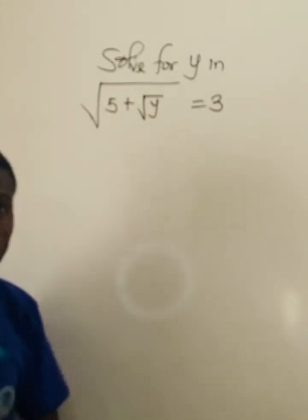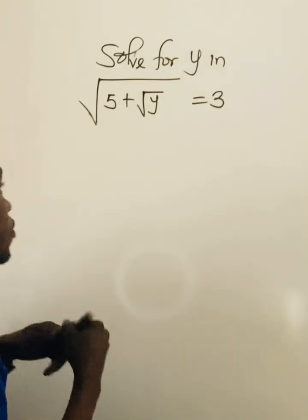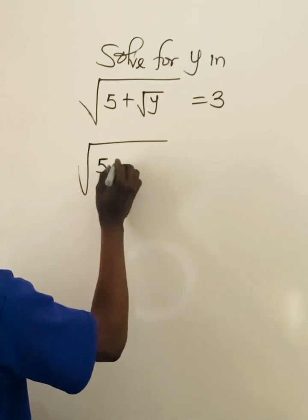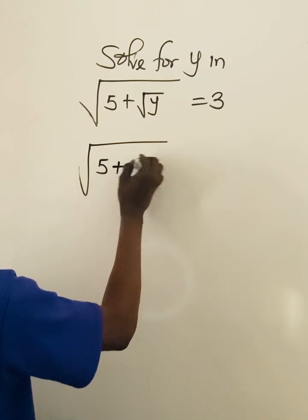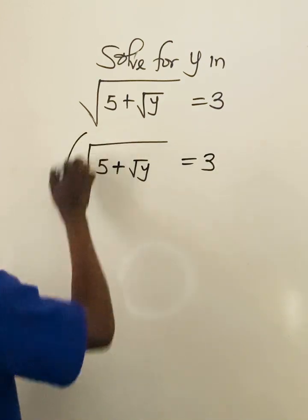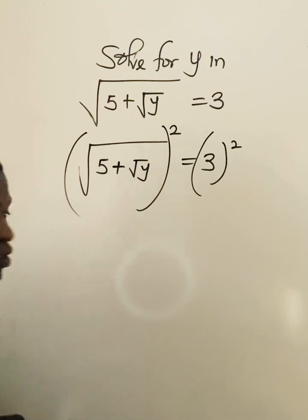For us to solve this question what we need to do is to square both sides. Let's square both sides. So we are going to have root 5 plus root y equal to 3. If I square both sides, I'm going to have it like this.